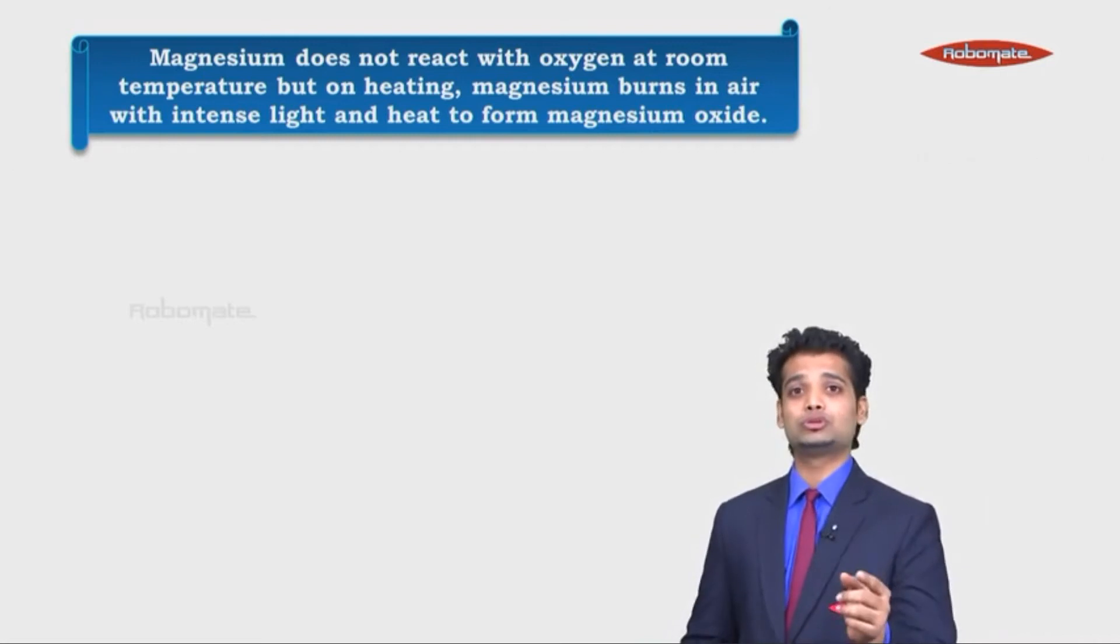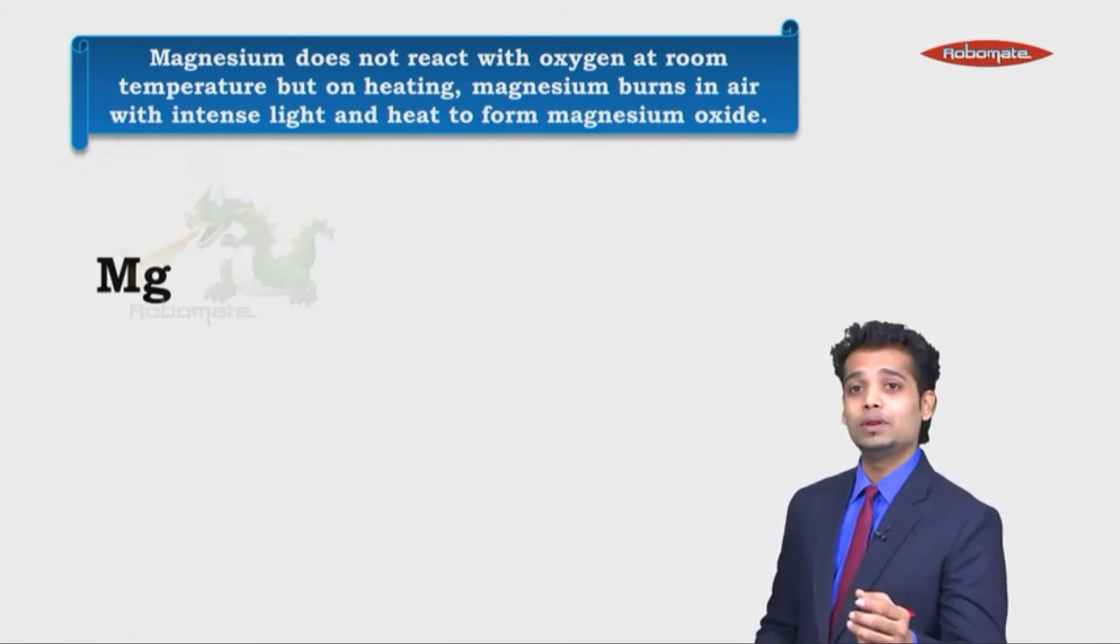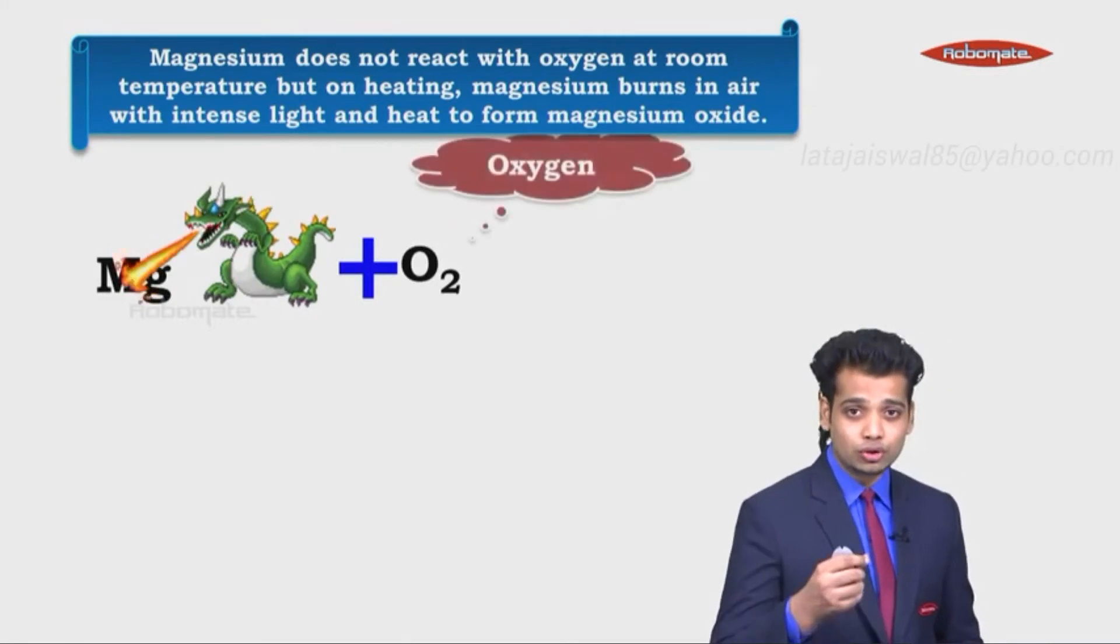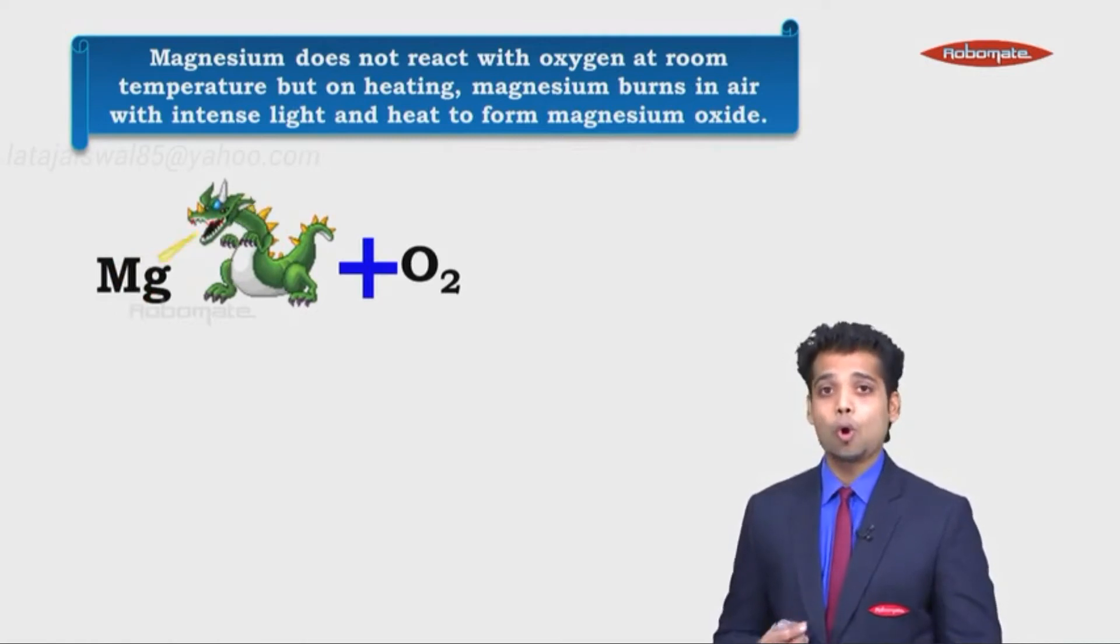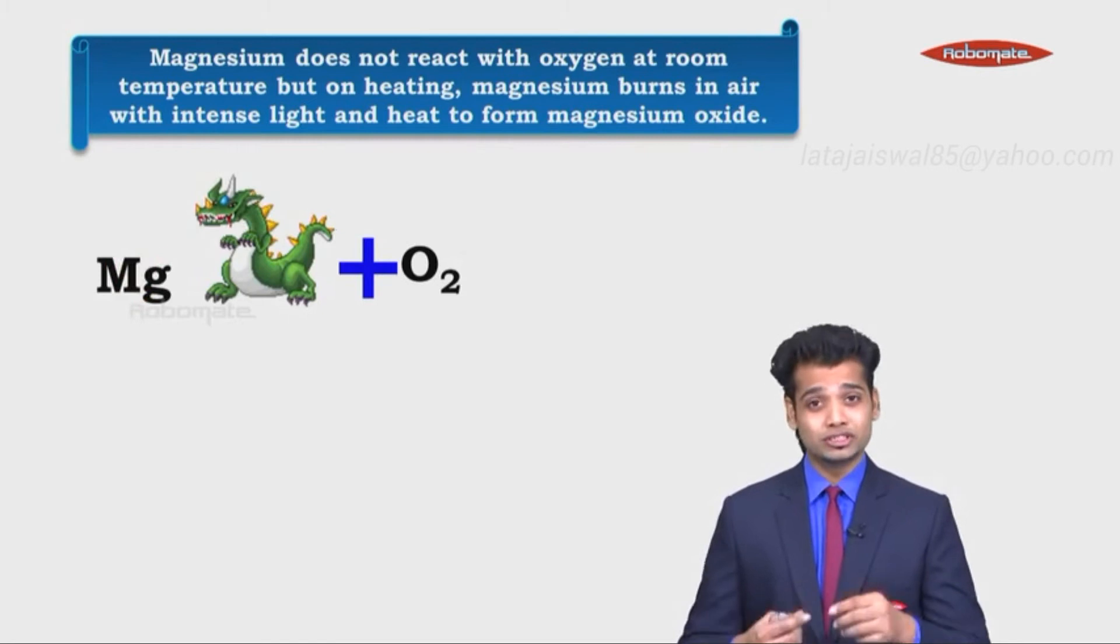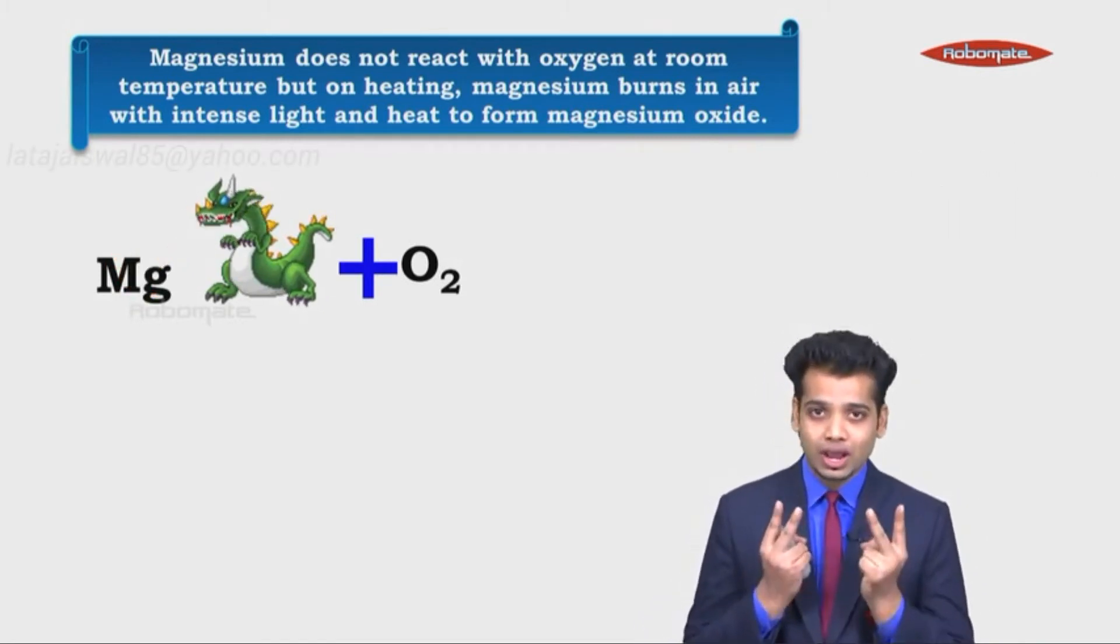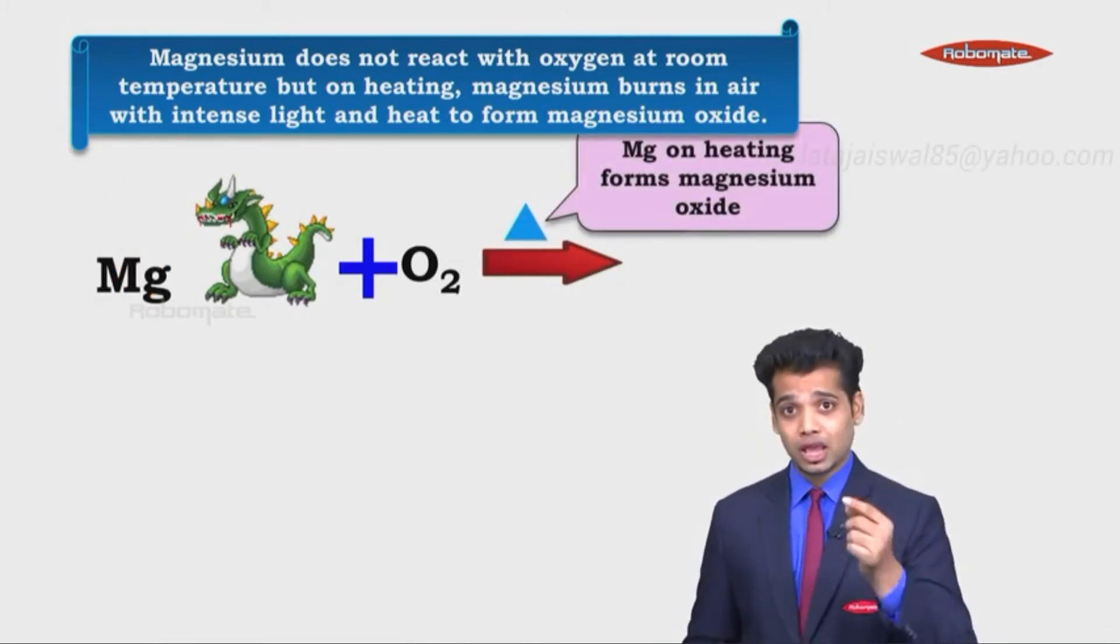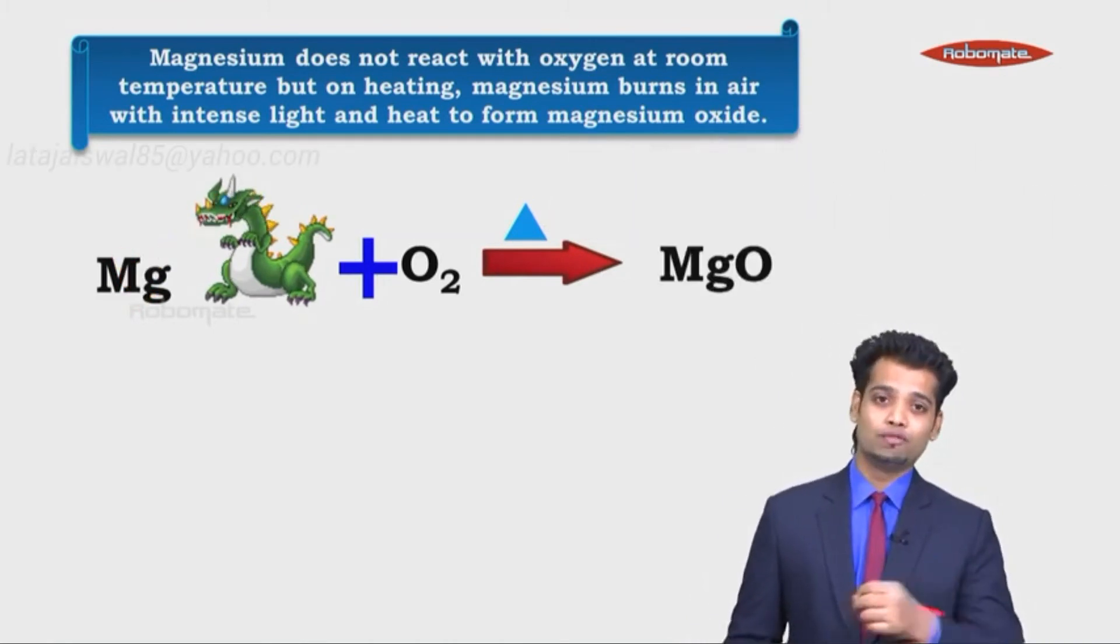So magnesium reacts with oxygen to form magnesium oxide. Mg will require a little bit of heating to form oxygen. Inside the flame would be oxygen, so it reacts with Mg. It forms MgO. So why? Why not Mg2O or MgO2? Because Mg valency is 2, O valency is 2. Cut, cut, twist, cross - MgO. Very good. The reactivity decreases, so you have to heat magnesium, and only when you heat it, it will form MgO.